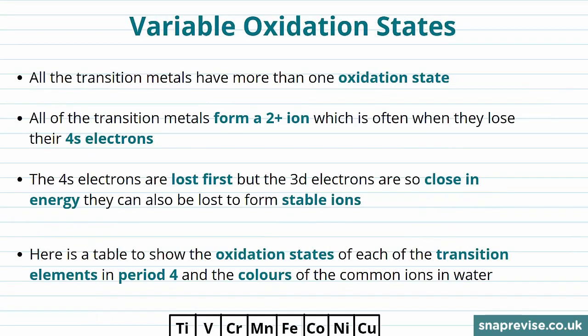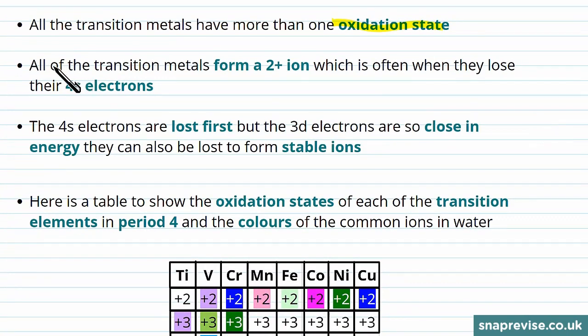One of the first key chemical properties of transition metals we're going to look at is the fact that all transition metals have more than one oxidation state. In fact, having many oxidation states is a property that's characteristic of transition metals. All of them form a 2+ ion, which is often when they lose their 4s electrons.